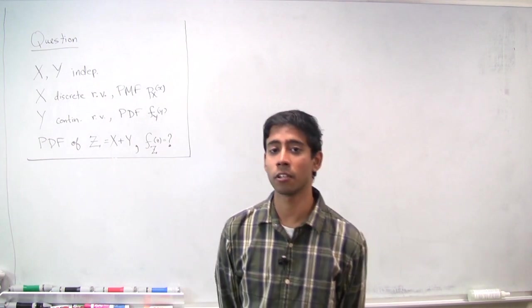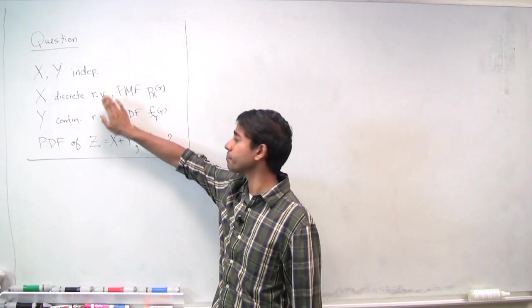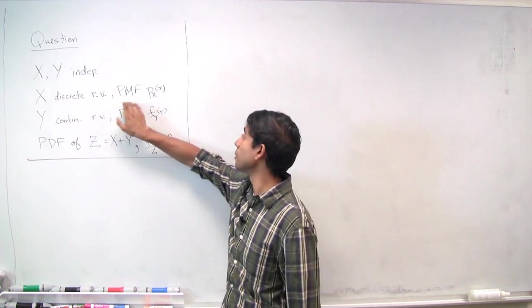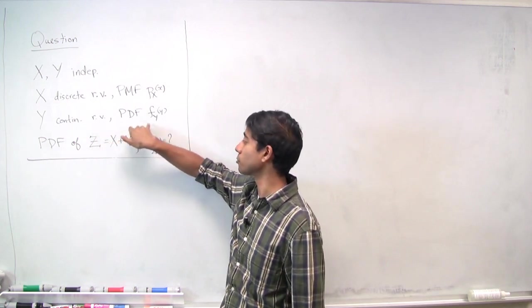The problem tells us the following. We're given that x and y are independent random variables. x is a discrete random variable with PMF p_x. y is continuous with PDF f_y.